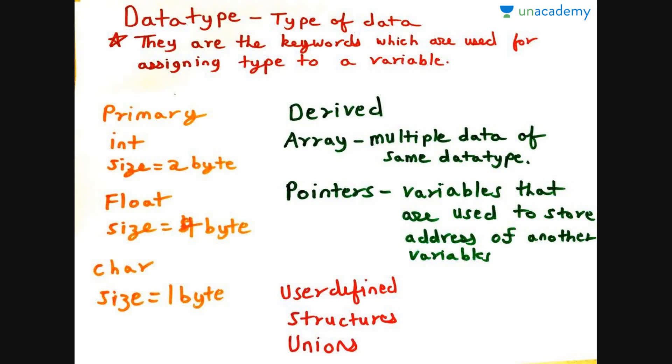Now let us move to data type. Now what does the term data type mean? When you break the word into two, you can read it as data and type. That is the type of data. They are the keywords which are used for assigning type to a variable. They can be further classified into primary, derived, and user defined. The primary data types are int size which is 2 bytes, float size which is 4 bytes, and char size which is 1 byte.